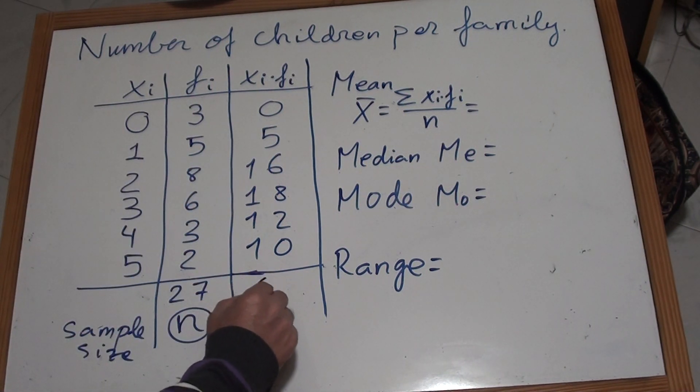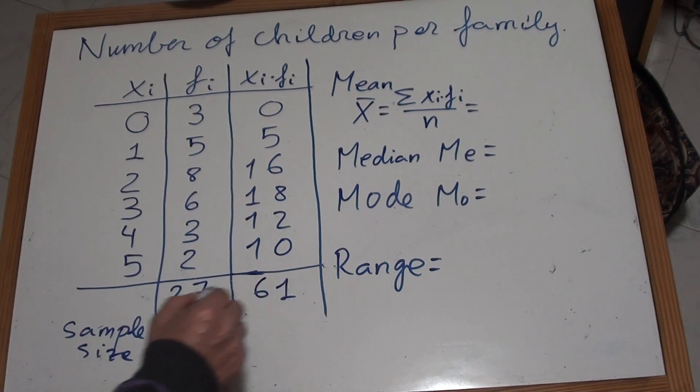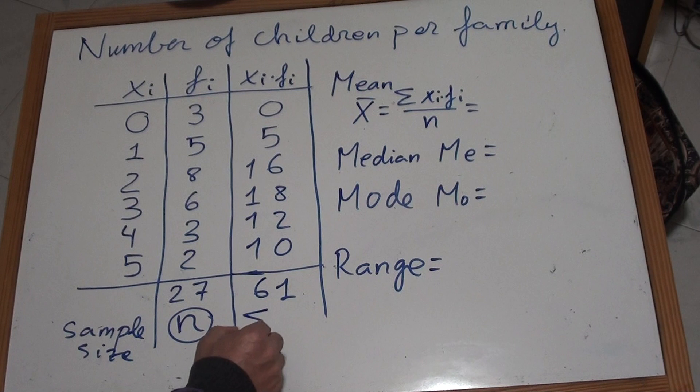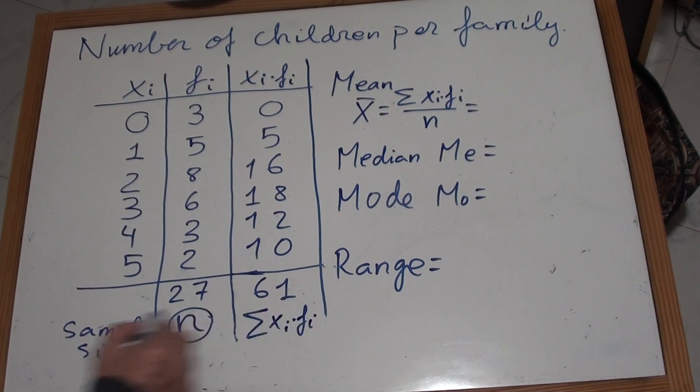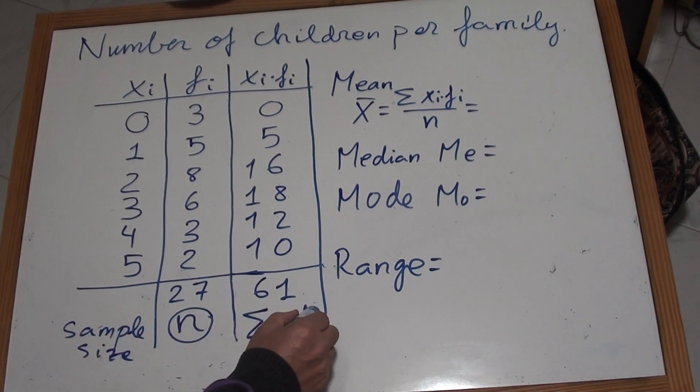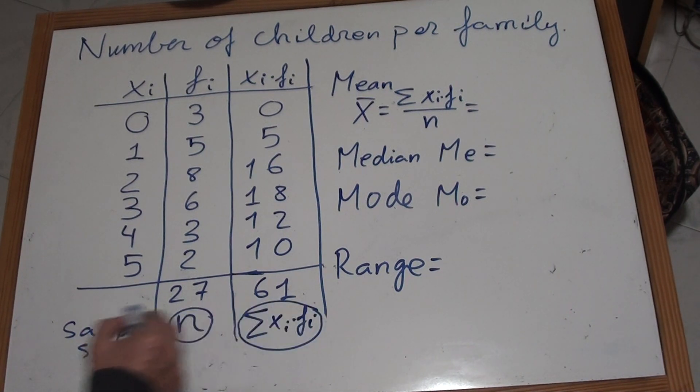Which is 61. 61 is what we represent with this symbol - the sum. This symbol means the sum of the data times the frequency, the sum of xi times fi.